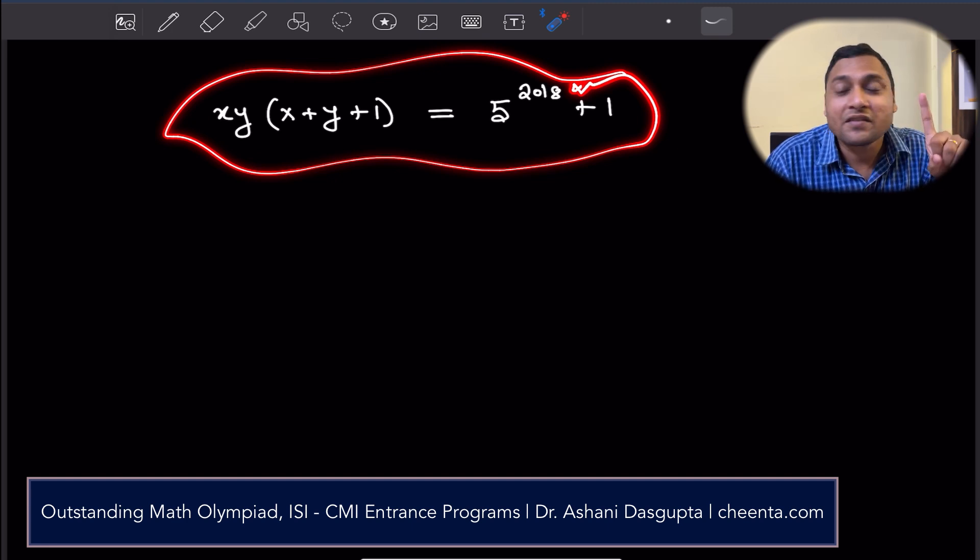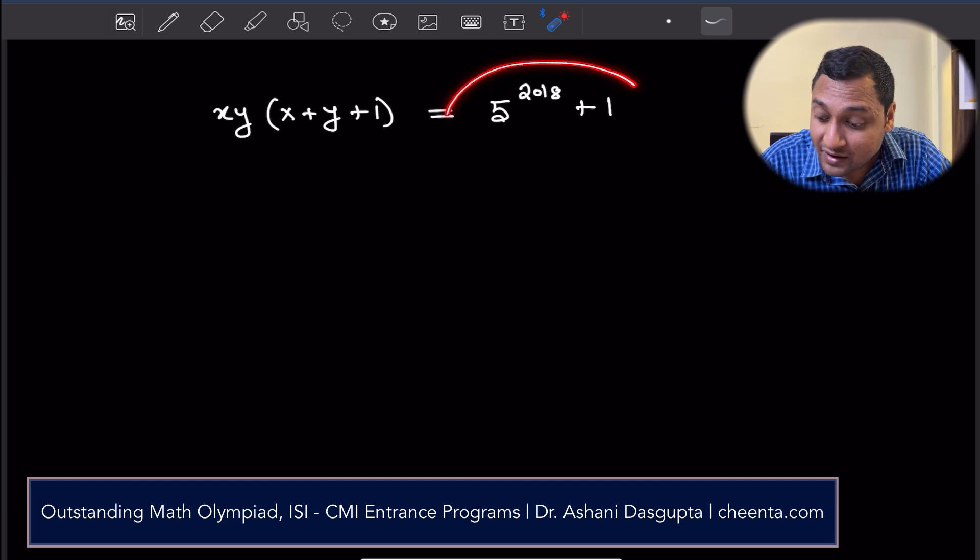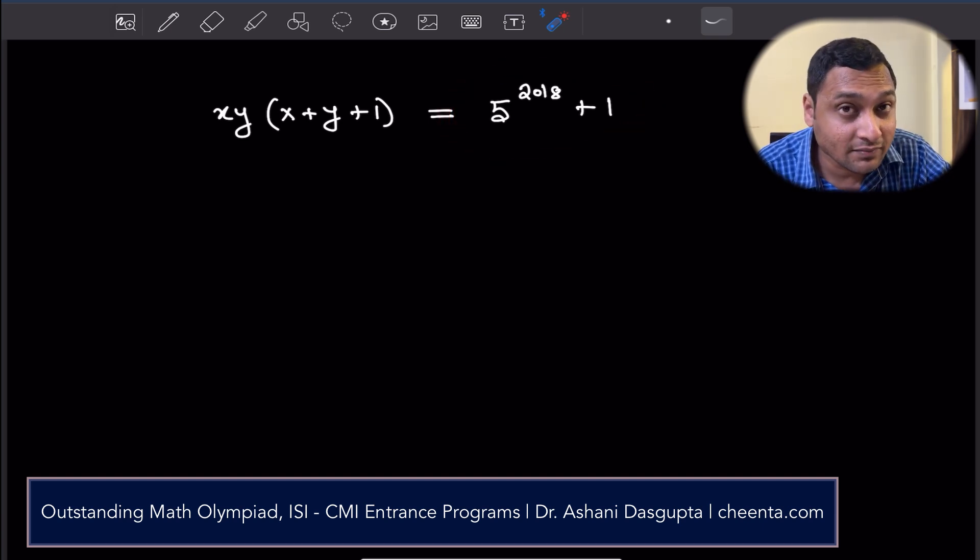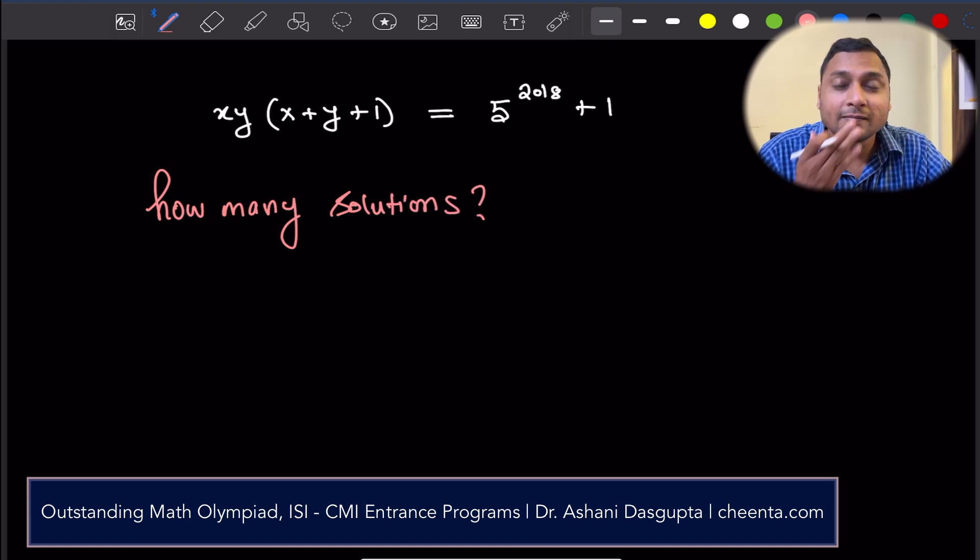I will also give you a challenge problem at the end of this video. Give that a try and if you can, put it in the comment section. So, this problem says that x and y are integers and x times y times x plus y plus 1 is equal to 5 to the power 2018 plus 1. We want to find out how many solutions are there of this equation.